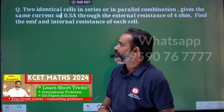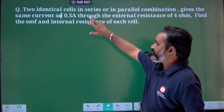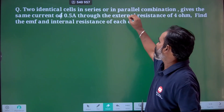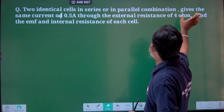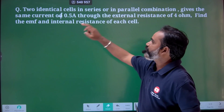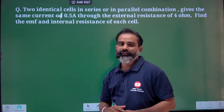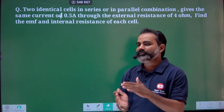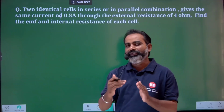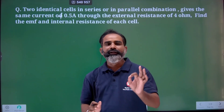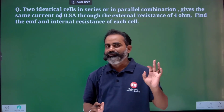So let's go to the problem now. Two identical cells in series or in parallel combination give the same current of 0.5 ampere. In this problem, the series and parallel connection current is the same.